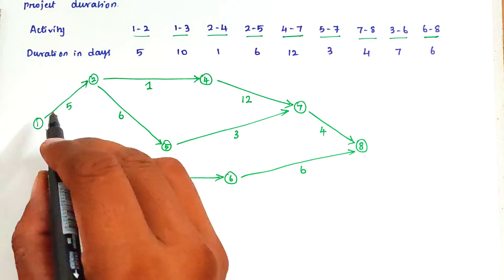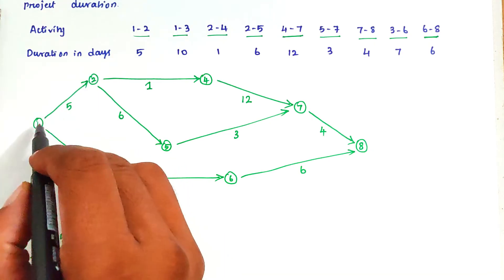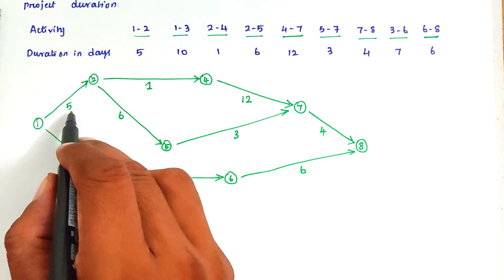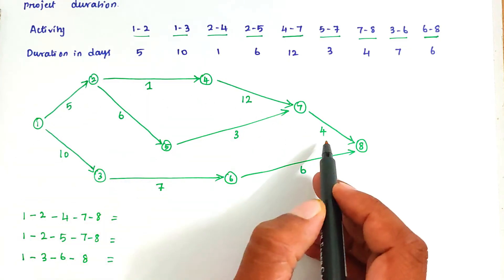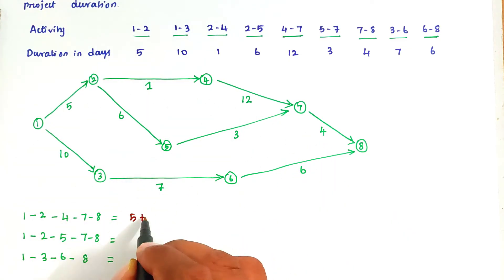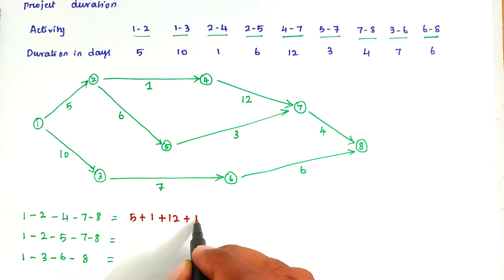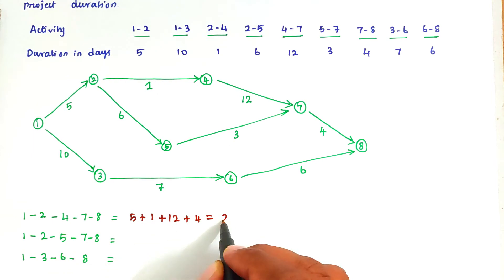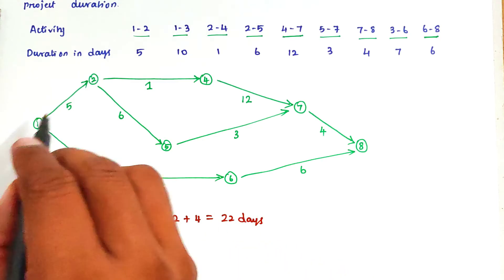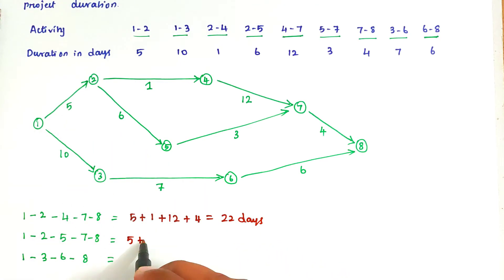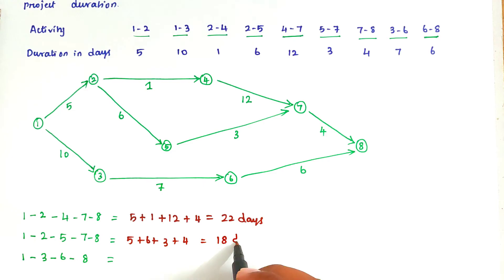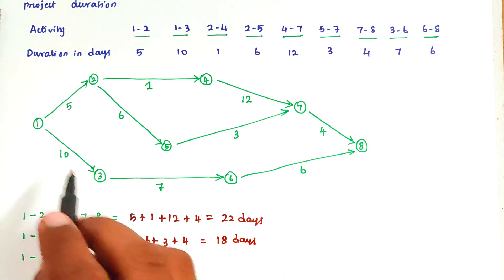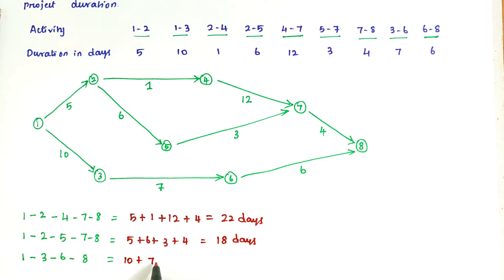So now we can calculate the duration. Path 1: 1-2-4-7-8, so 5 plus 1 plus 12 plus 4 — the total duration is 22 days. Path 2: 1-2-5-7-8, so 5 plus 6 plus 3 plus 4 — the total duration is 18 days. Path 3: 1-3-6-8, so 10 plus 7 plus 6 equals 23 days.